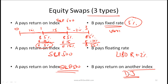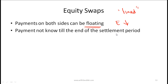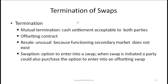Two key exam points: first, payments on both sides of an equity swap can be floating, as shown when the index went down and the so-called fixed rate payer still had a variable payment. Second, the payment amount is not known until the end of the settlement period. Keep both these points in mind for the exam.